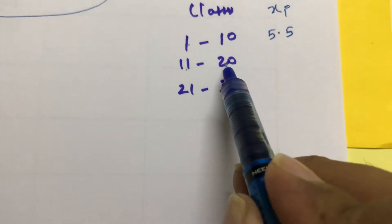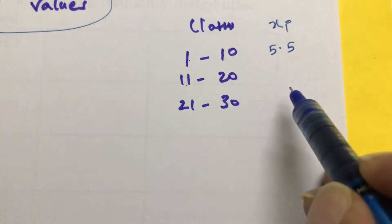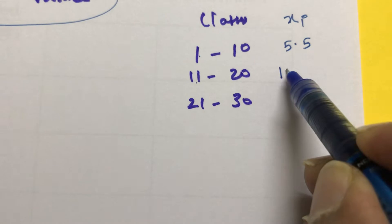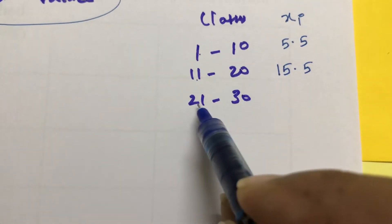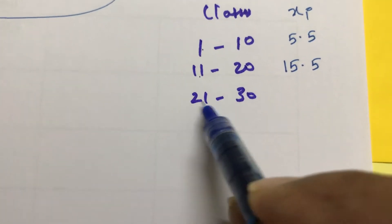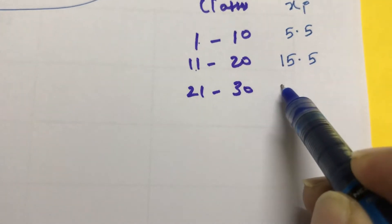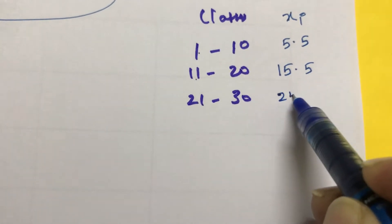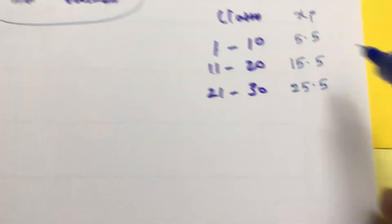And 11 plus 20 is 31, 31 by 2, that is 15.5. And 21 plus 30 is 51, 51 by 2, that is 25.5. These are the class marks.